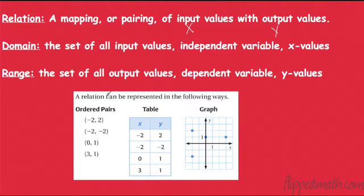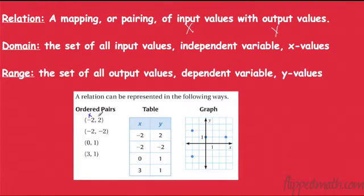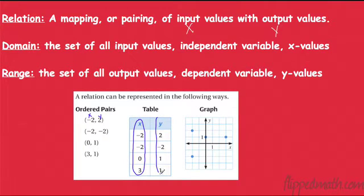The range is just the opposite — it's the set of all output values. It's the dependent variable, the y value. So anything that talks about y values is the range. If you have ordered pairs with an x and a y, the domain is all the x values and the range is all the y values. In a table, same thing: domain is all the x values, range is all the y values.